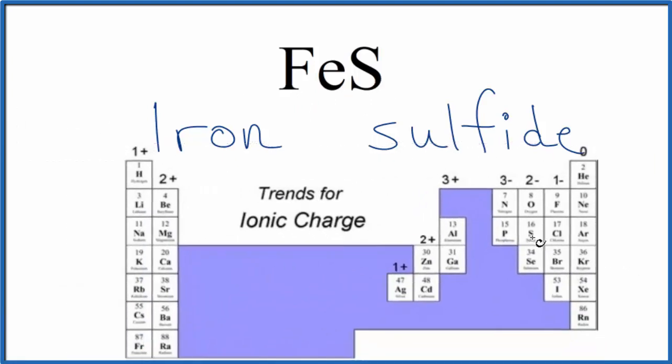Sulfur has a 2- ionic charge. So let's put that up, 2-. That means the iron has to be 2+.